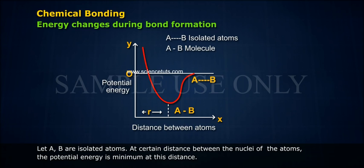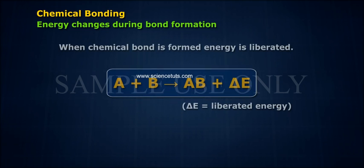Energy changes during bond formation. Let A and B be isolated atoms. At a certain distance between the nuclei of the atoms, the potential energy is minimum. When a chemical bond is formed, energy is liberated. A plus B gives AB plus ΔE, where ΔE is the liberated energy.